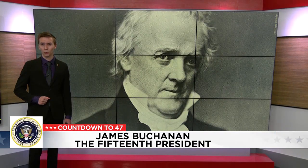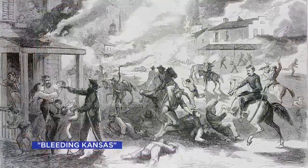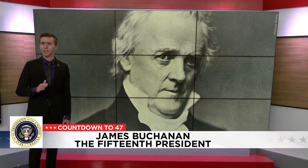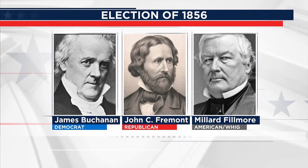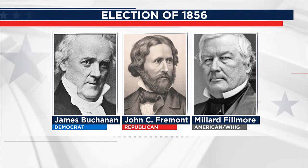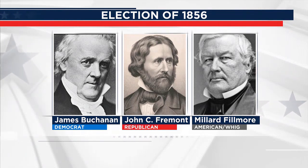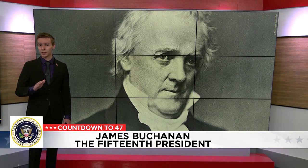In 1856, Buchanan would run for president one more time. Due to his service abroad, as well as his absence during domestic controversies like Bleeding Kansas, Buchanan was able to secure the Democratic nomination for president. The general election would see three prominent candidates. Buchanan faced off with challenger John C. Fremont of the newly founded Republican Party, as well as former President Millard Fillmore running for the American Party and what remained of the Whig Party. Buchanan won the election. The office he had long sought was now his, but he'd soon find the job was not what he wanted it to be.